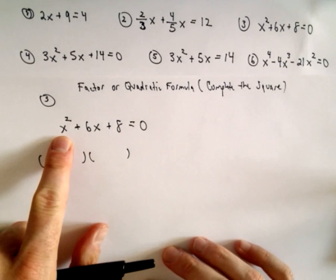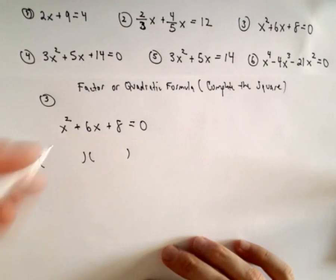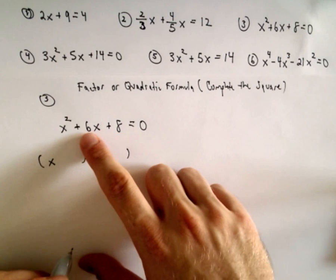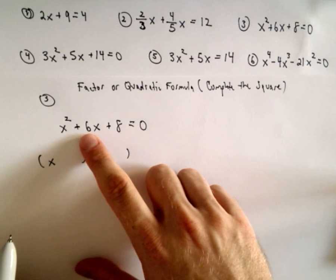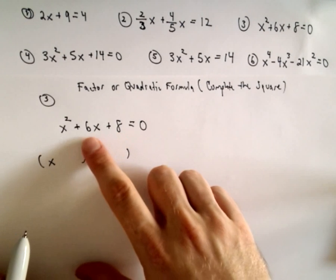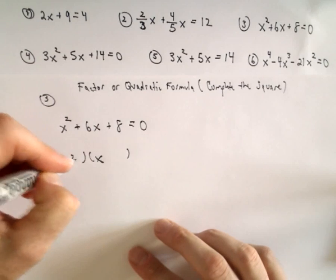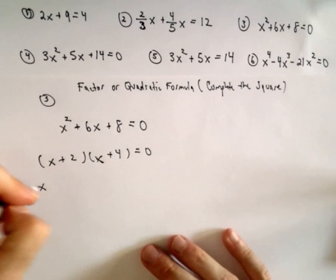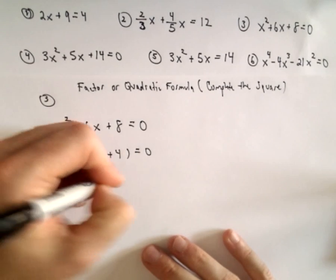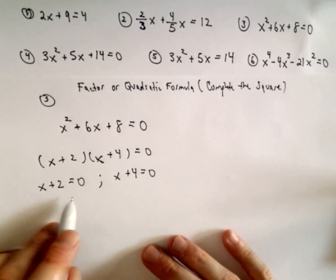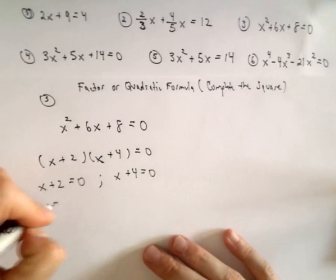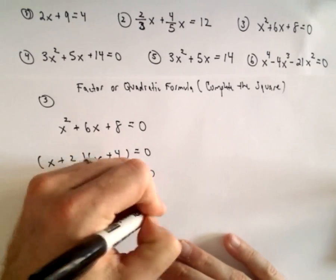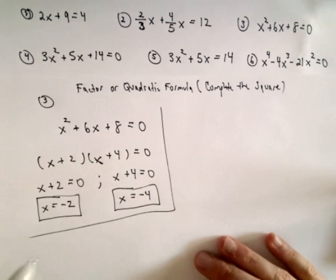If the coefficient on x squared is just a positive 1, which in this case it is, we just look for two numbers that multiply to give us the constant, which is 8, but add up to the coefficient on x, which is 6. How about positive 2 and positive 4? Now we just set each factor equal to 0 and solve. If x plus 2 equals 0, subtract 2 from both sides: x equals negative 2. If x plus 4 equals 0, subtract 4 from both sides: x equals negative 4. Those are our solutions.